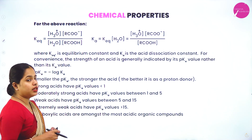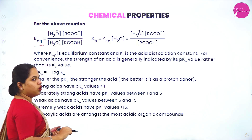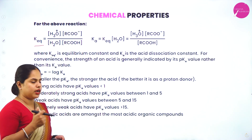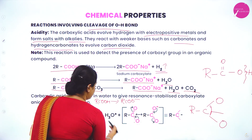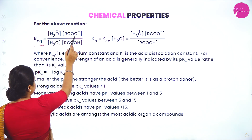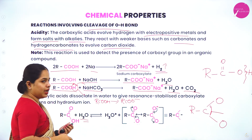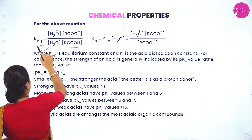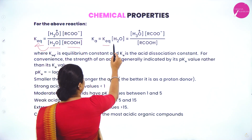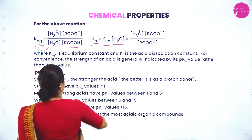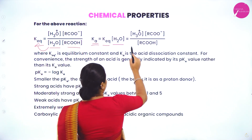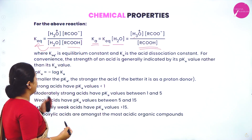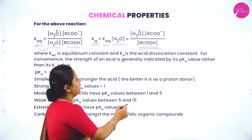Using the dissociation equation we write the equilibrium constant expression. The equilibrium constant Ka equals the product of molar concentrations of H₃O⁺ and RCOO⁻ divided by the molar concentration of the carboxylic acid (water concentration is taken to the other side). Ka is called the acid dissociation constant. For convenience, acid strength is indicated by pKa = −log(Ka).